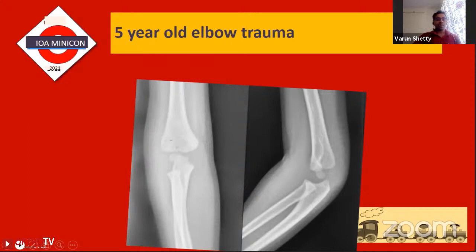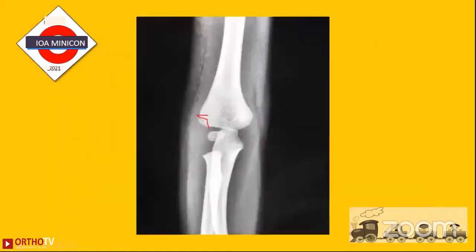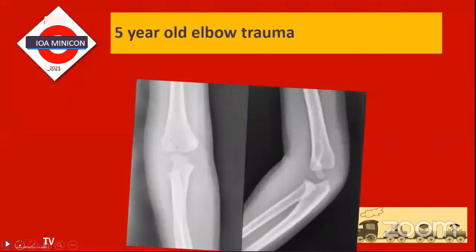There are five procedures we will describe today: conservative management, fixation in situ, closed reduction with arthrogram and fixation, and open reduction. These are the only ways to treat an acute lateral condyle fracture. If you master these techniques, you have learned how to treat it.